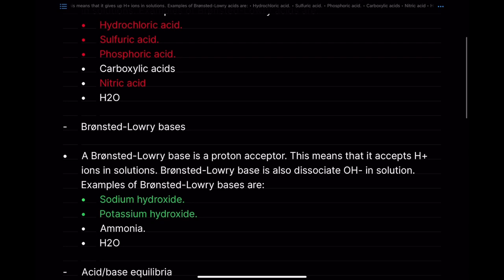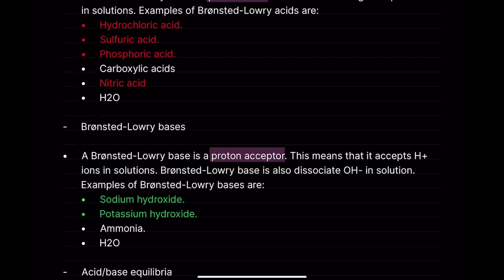A Bronsted-Lowry Acid is a proton donor and a Bronsted-Lowry Base is a proton acceptor. If you get a one-mark question asking that, that's what you write. Bronsted-Lowry bases are well known for being able to dissociate hydroxide ions in solution.